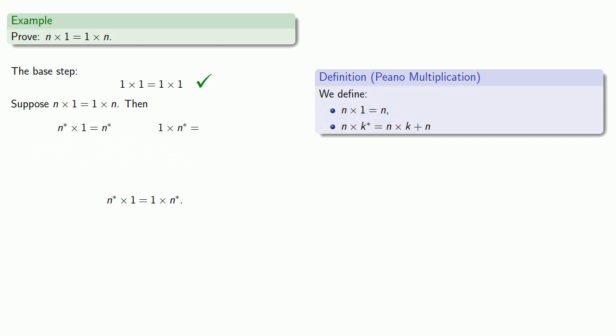1 times n star, our definition of multiplication tells us that's 1 times n plus 1. Now we assume that 1 commutes with n, so that's n times 1 plus 1. Our definition says that n times 1 is n. And we also proved a while back that n plus 1 is the same as n star.